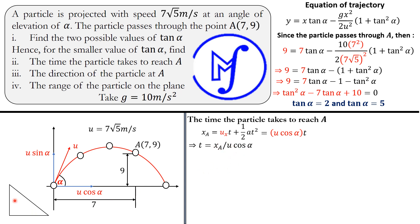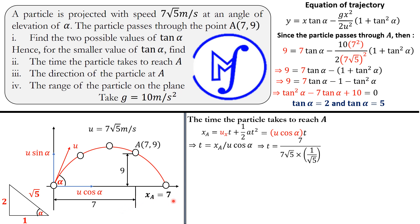We need to find cos α using the smaller value tan α = 2. Since tan α = 2/1, we construct a right-angle triangle with opposite = 2 and adjacent = 1. By the Pythagorean theorem, the hypotenuse = √(2² + 1²) = √5. Therefore cos α = 1/√5. Substituting: t = 7 / (7√5 × 1/√5) = 7/7 = 1 second. The time taken to reach point A is 1 second.